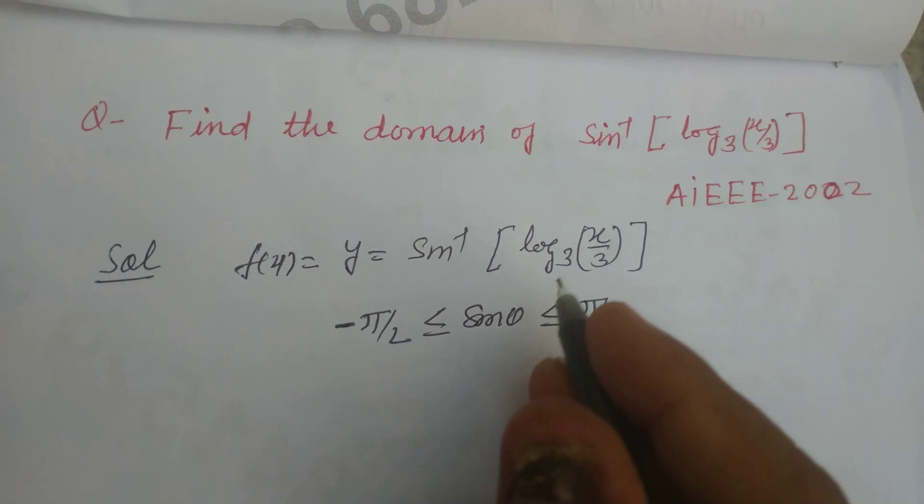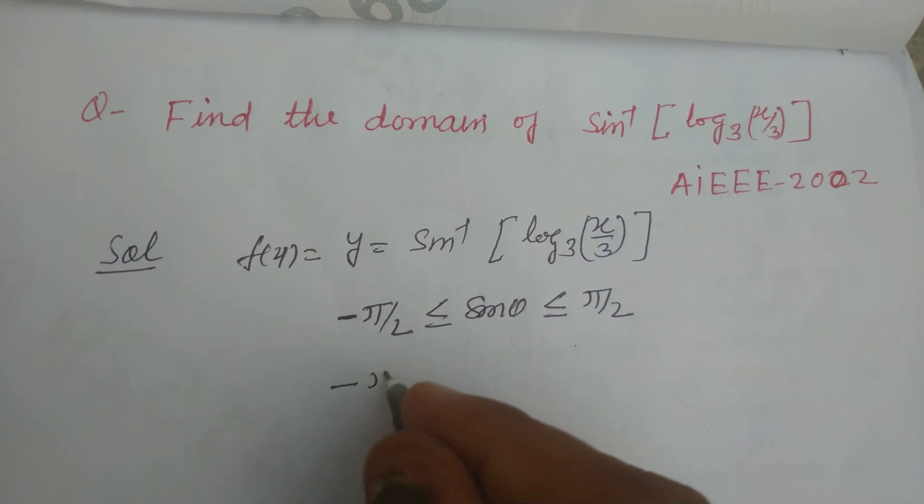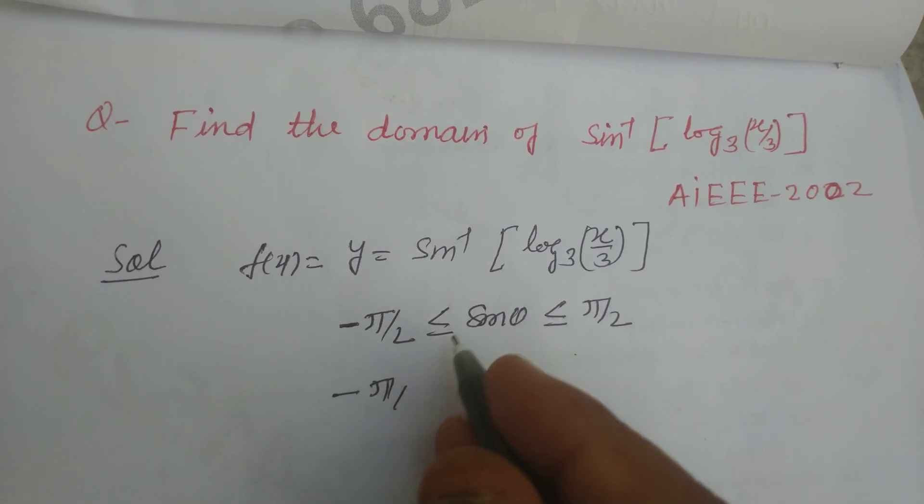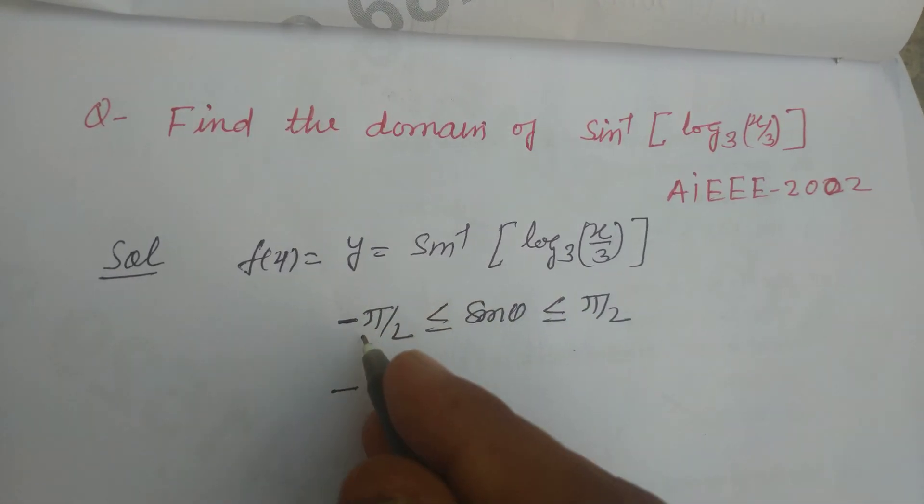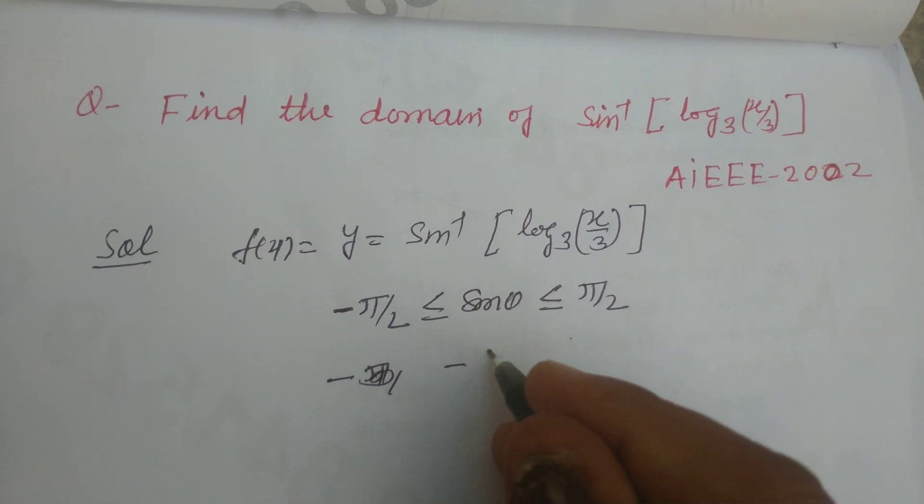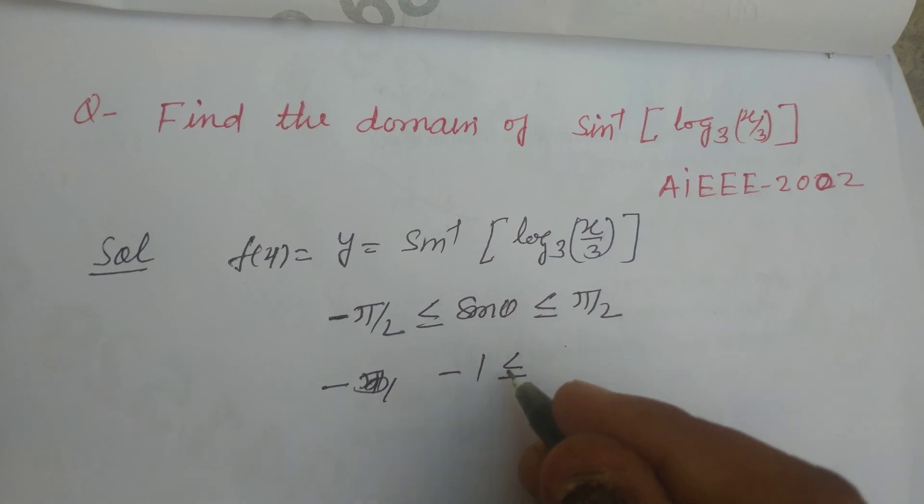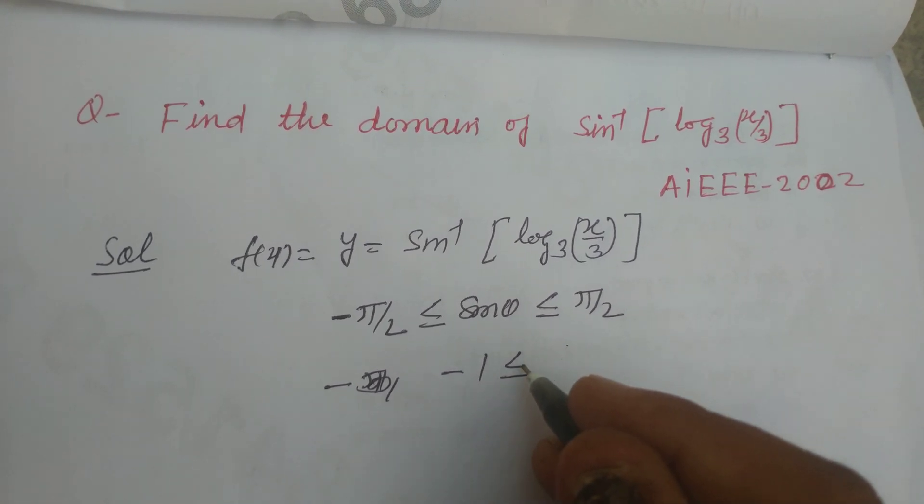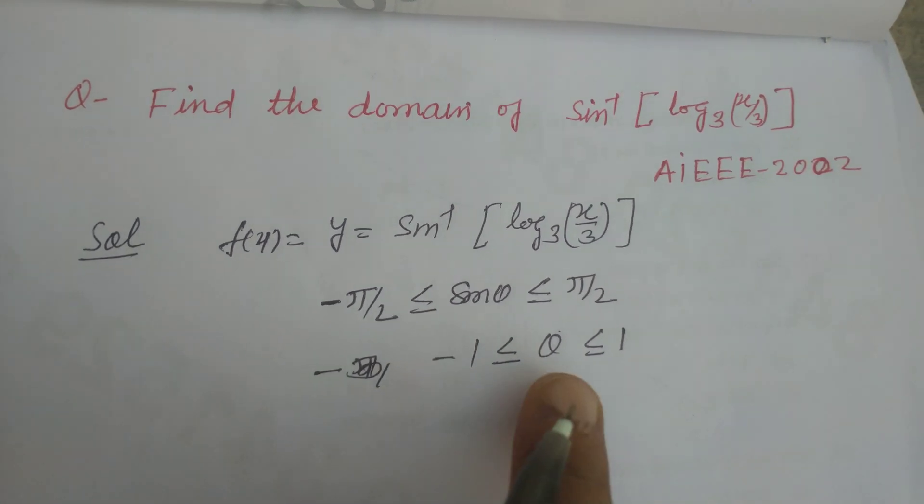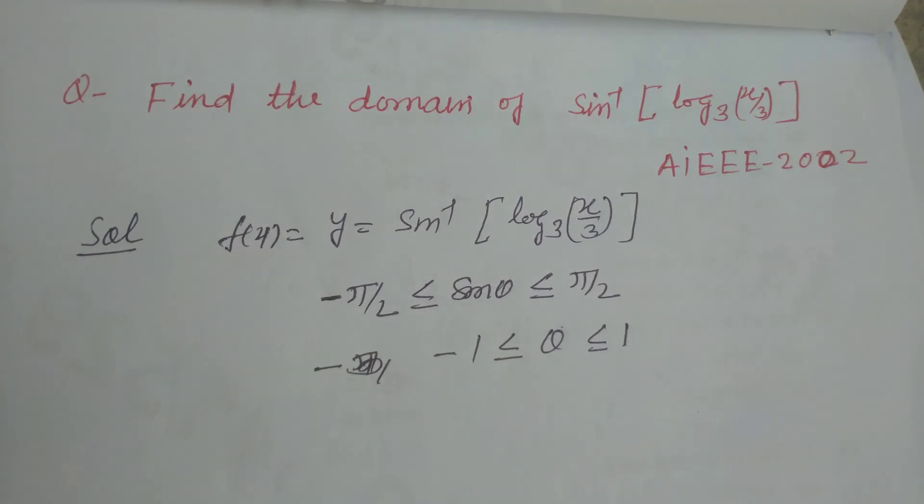Now we put theta which is pi by 2. So sin theta lies between minus pi by 2 to pi by 2. When we put the value of sin, this is minus 1 less than or equal to theta less than or equal to 1. So theta lies between minus 1 to plus 1.